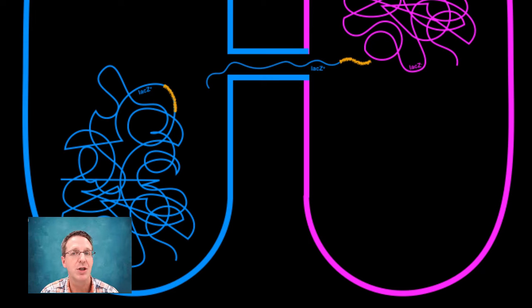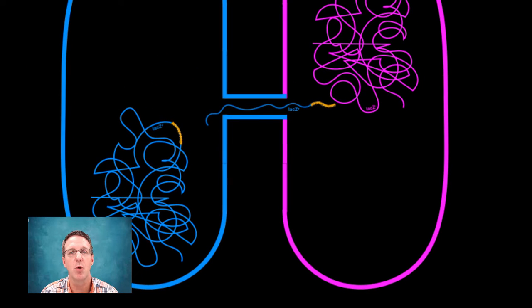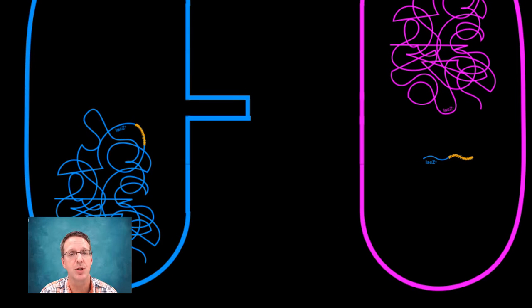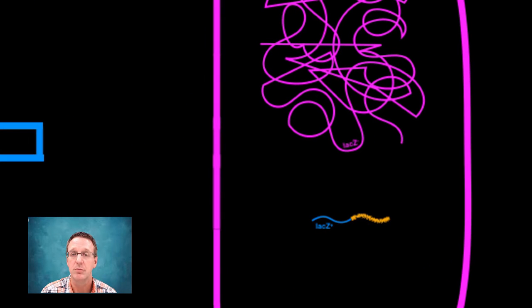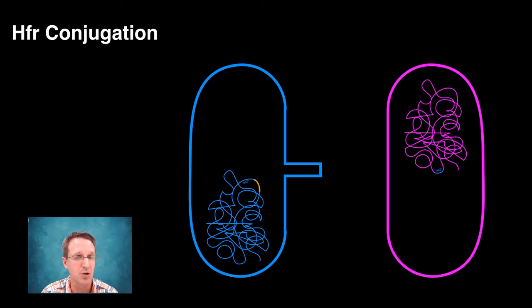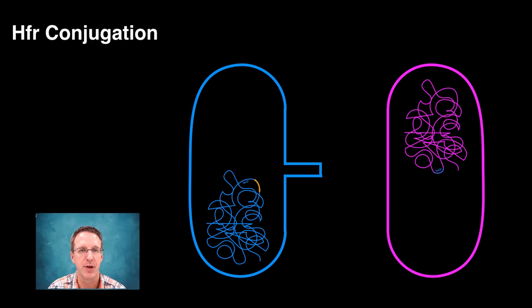But because the conjugation process doesn't last that long, only a small portion of the chromosome is actually transferred into the recipient cell before the sex pilus bridge is broken. And now, in this case, just like in transformation, homologous recombination can take place between the incoming fragment and the recipient's chromosome, potentially generating a new phenotype. And because the entire F-plasmid is not transferred this time, the recipient actually remains female.